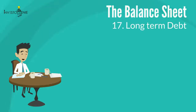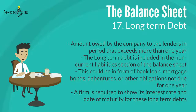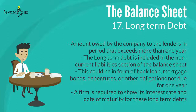Seventeen: long-term debt is the amount owed by the company to lenders in a period exceeding more than one year. It is included in the non-current liabilities section of the balance sheet, and could be in the form of bank loans, mortgage bonds, debentures, or other obligations not due for one year. A firm is required to show its interest rate and date of maturity for these long-term debts. A company in good financial condition maintains these debts consistently.